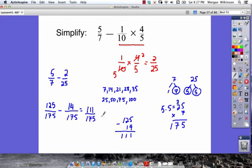We need to think about if we can reduce this. They are both odd so we can't cut them in half. 111 is not divisible by 5. Neither of them are divisible by 10. 1 plus 1 plus 1 is 3. 1 plus 7 is 8, but 8 plus 5 is 13. So this number 175 is not divisible by 3. We've got our final answer.